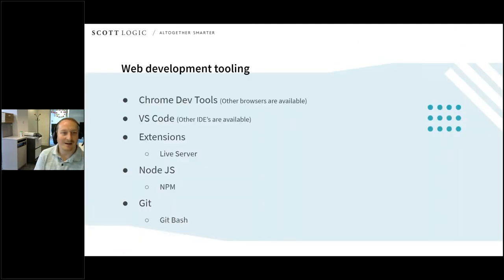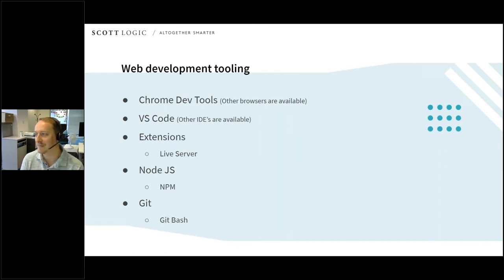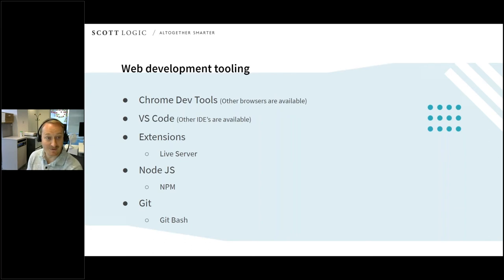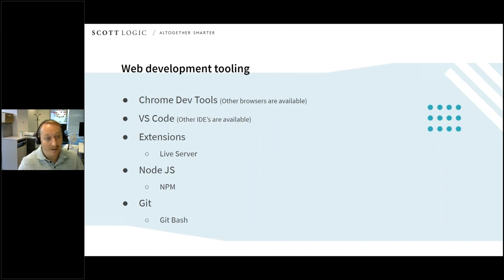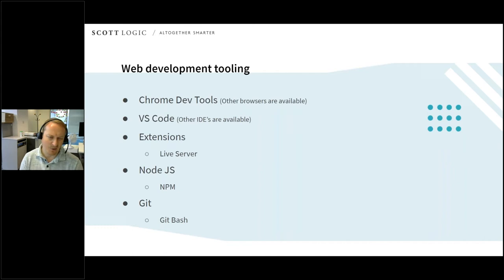Which tooling will I be using today? This is my toolchain of choice — by no means one that everybody has to pick, but it seems quite common. I'll be using a little bit of Chrome DevTools, VS Code as an editor, and Visual Studio to show some of the legacy integration. Some VS Code extensions I'll be using: Live Server for hosting. I have Node.js installed — it's pretty much a prerequisite — with NPM. And there might be some Git in there too.